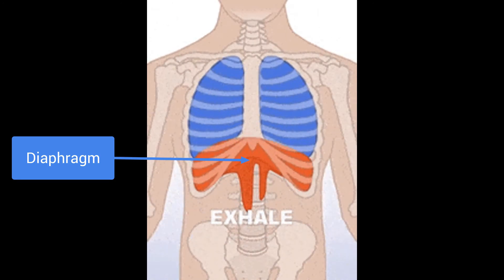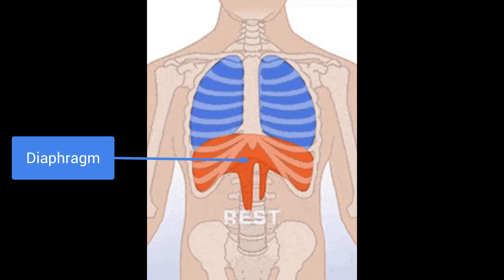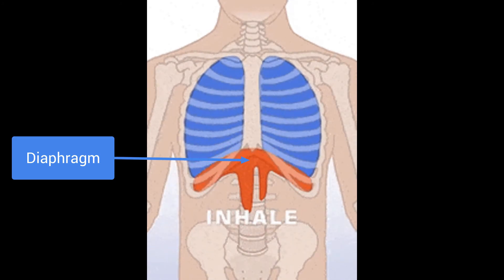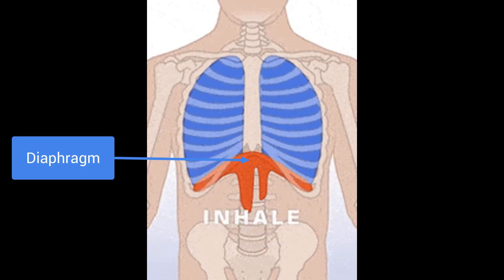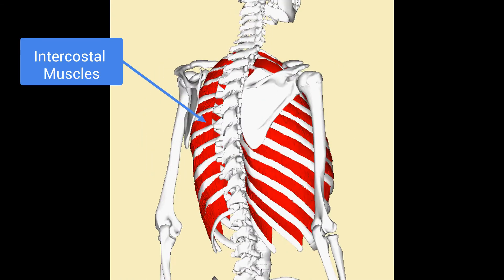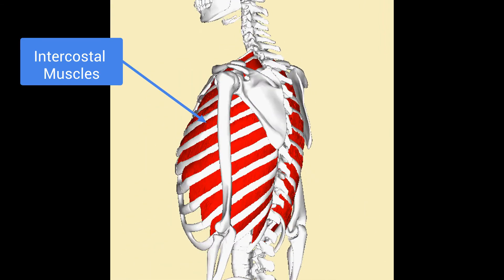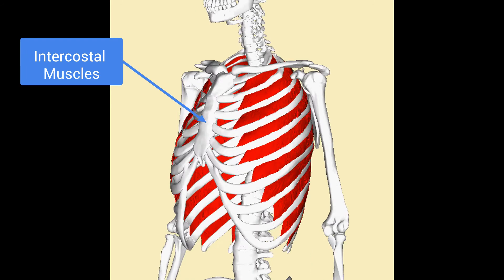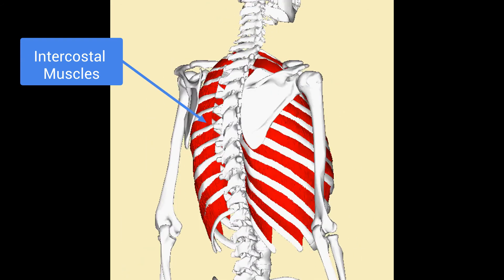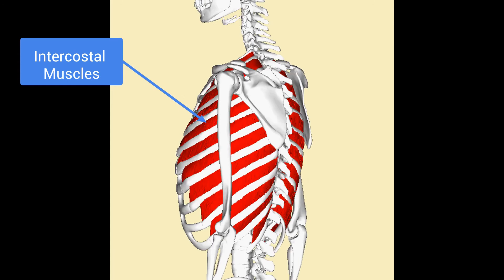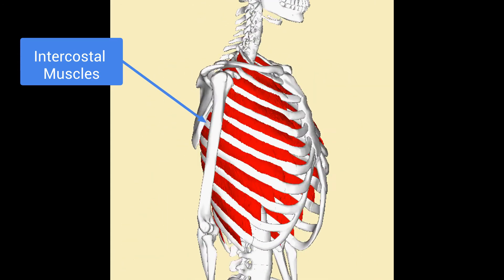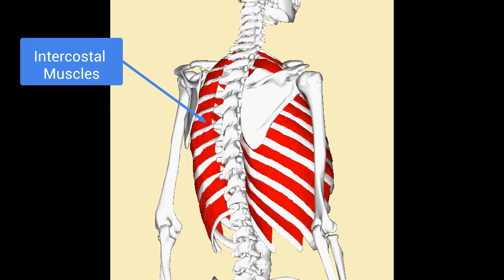When the diaphragm relaxes, it moves upwards into a dome shape, which forces air out of the lungs. This causes exhalation, known as breathing out. Similarly, the intercostal muscles contract in order to expand the rib cage and help open up the lungs during inhalation. As the intercostal muscles relax, the rib cage drops inwards and downwards to help with exhalation.